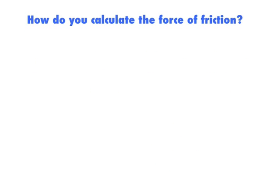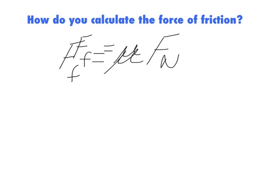The force of friction is calculated by combining the two factors: the roughness of the surface, represented by the coefficient of friction, and the normal force — the force of contact between the two surfaces. So the formula is simply: the force of friction equals the coefficient of friction times the normal force (F_f = μ × F_n). In a problem, I look up the coefficient of friction for the given surfaces on the table, find the normal force, multiply them together, and that gives the force of friction.